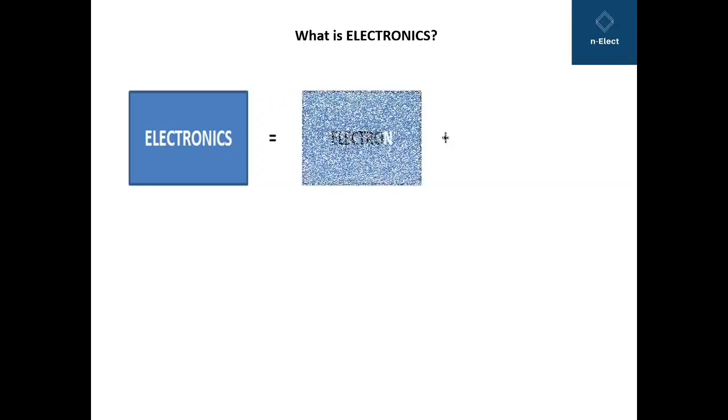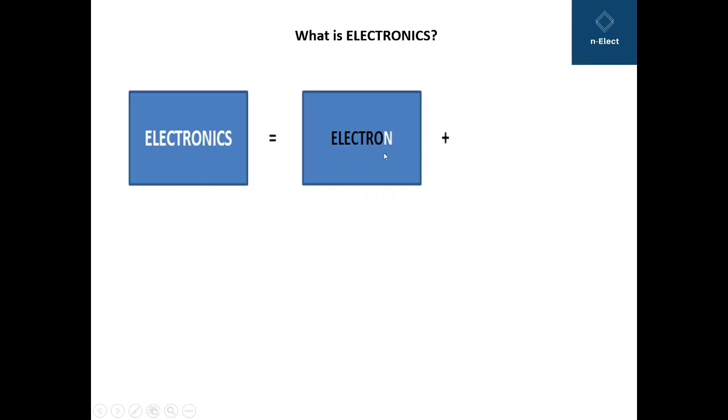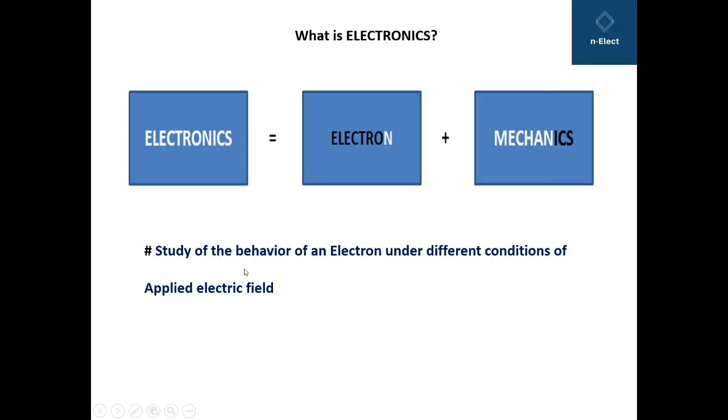Now moving on to what basically the electronics is. Electronics is the word which is derived from electron mechanics. Now what is electron mechanics? It's a study of the behavior of an electron under different conditions of applied electric field.